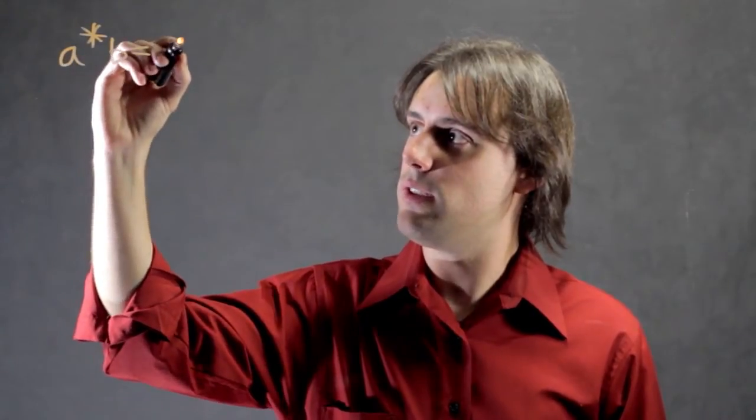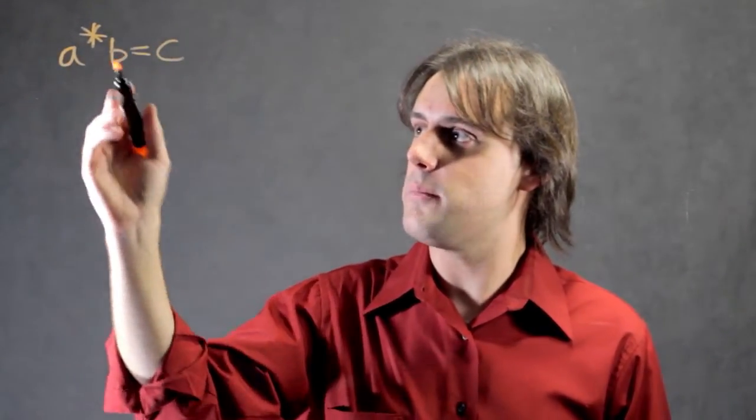we would want to use the asterisk symbol to denote multiplication. So if we have A asterisk B, this will yield a product C, where A and B are numbers.